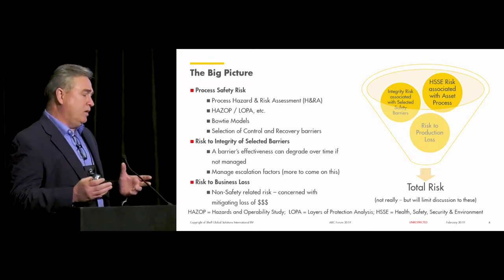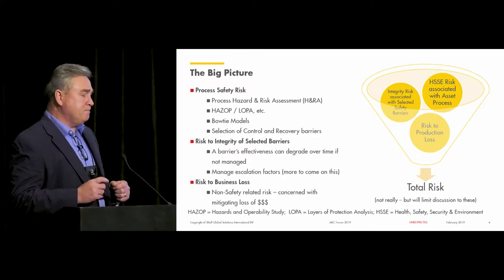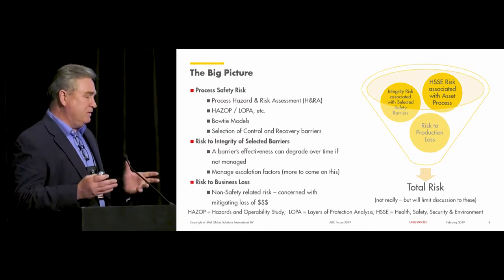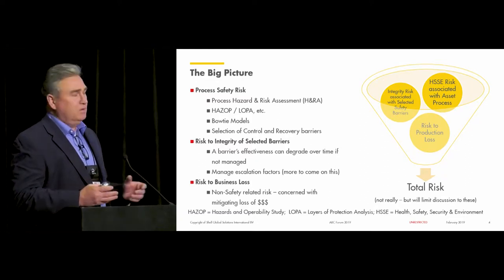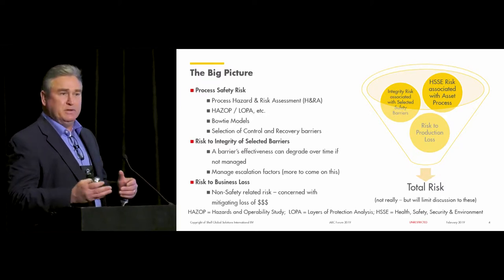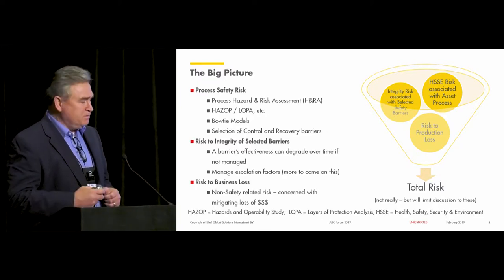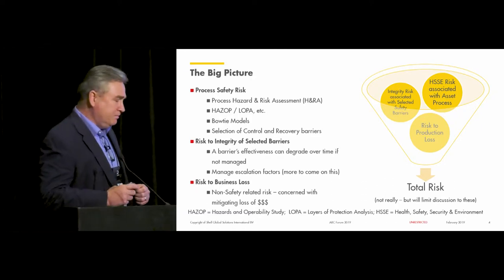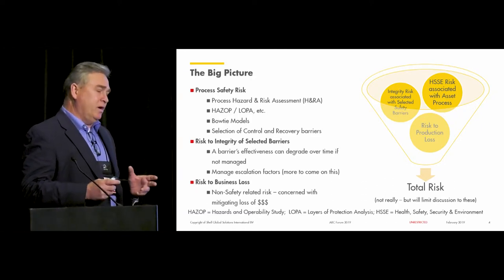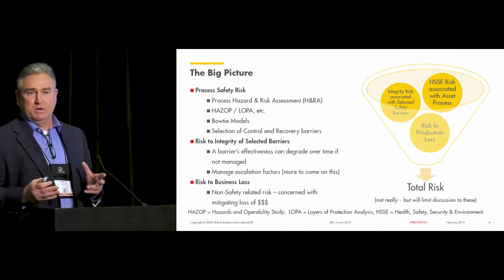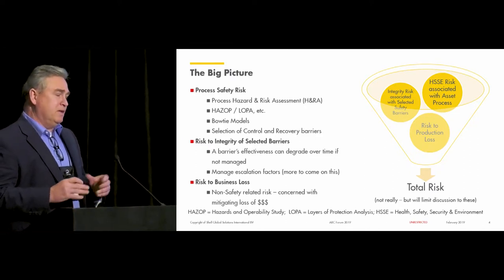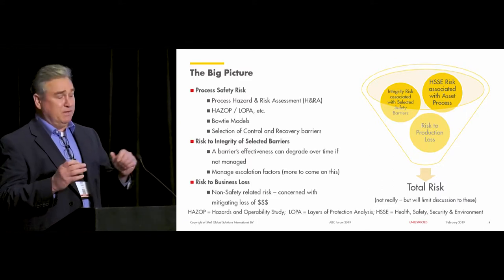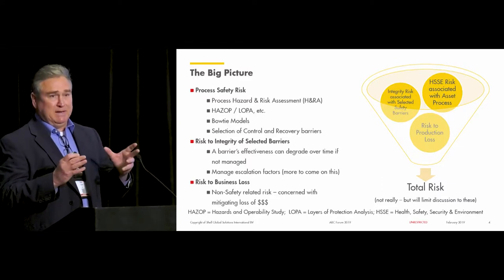The second category is risk to business loss — related to loss of dollars, loss of services or products, or interruption of service to our customers. That's generally rolled up into non-safety related risk. The third category is what I want to elaborate on in this presentation: how we manage our top events, which relates back to that first category.